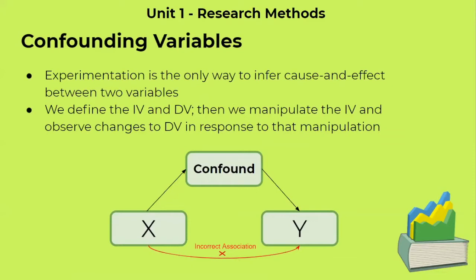To sum up experimentation and how confounds affect that, we're going to first look at our independent and dependent variables. We're going to define each one and operationalize them so that we can quantify them. Then we're going to manipulate the independent variable and test our question, and observe the effects of this manipulation on the dependent variable or outcome variable. However, if we don't control all other variables besides our two variables, we're going to have confounding variables, causing incorrect associations. As seen in this diagram, we think that x causes y, but the confound is clouding our clarity of this association. Instead of x actually causing y, the confound is interfering. So in order to find the true effect of x on y, we're going to have to eliminate our confounds.